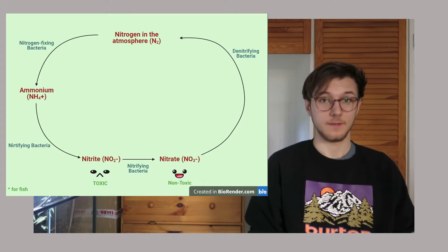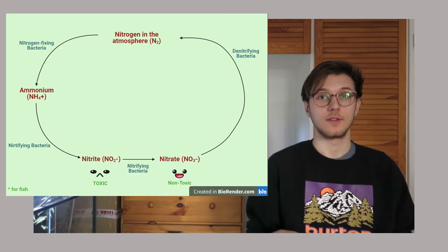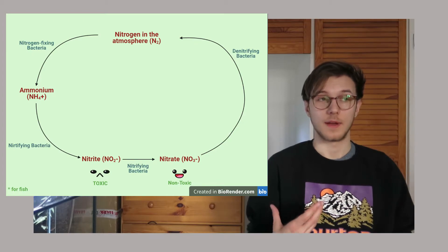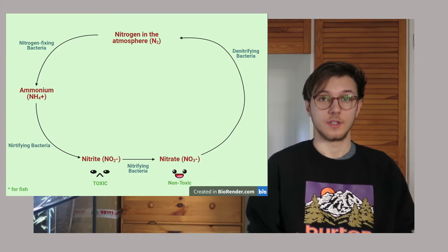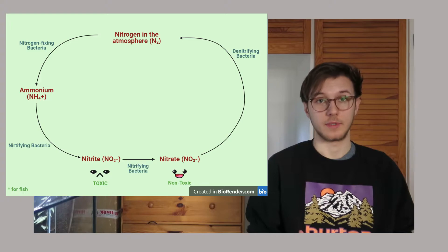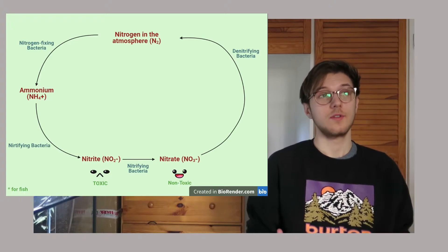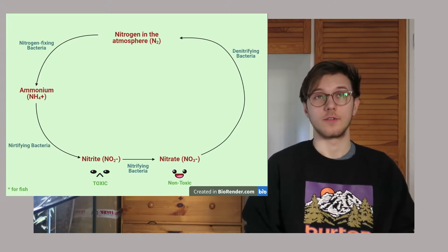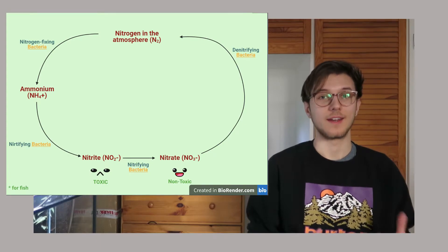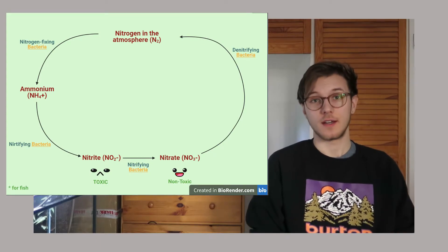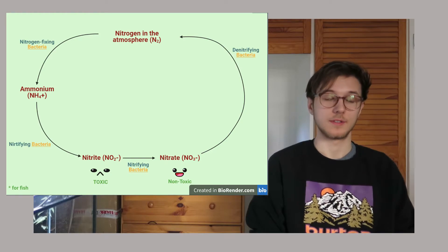After it starts into nitrate, this nitrate gets turned into atmospheric nitrogen again by denitrifying bacteria. What you're seeing here are many types of bacteria, and in fact, those are the beneficial bacteria everyone is talking about. That's pretty easy, right?